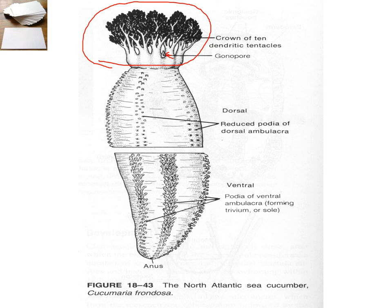Since they have secondary bilateral symmetry, they have a dorsal surface which always remains on top. They have five body sections, just like the radially symmetrical echinoderms. Three of those sections have tube feet and face down to the ventral surface so they can crawl along with their tube feet. Two of those sections have reduced or absent tube feet and face upward — you don't really need tube feet up into the water column.